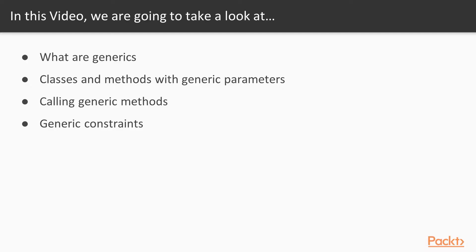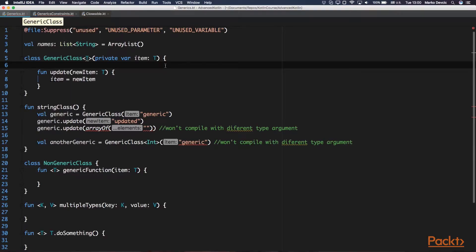The first video will be about generics. Here we'll explain generics and we're going to see how to define classes and methods with generic type parameters. We'll also see how to call generic functions and how we can put constraints to generic type parameters. We've already seen some generic classes in this course.